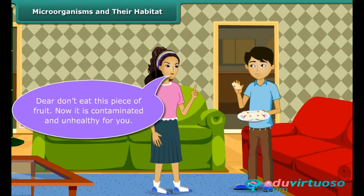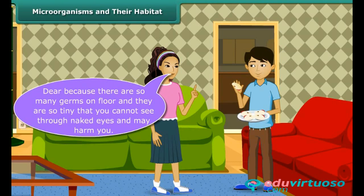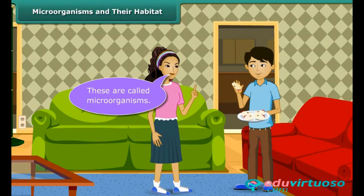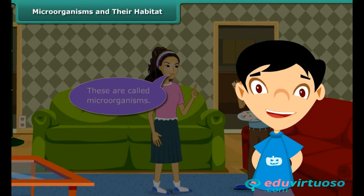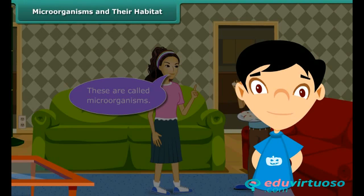Dear, don't eat this piece of fruit — it is contaminated and unhealthy for you. Because there are so many germs on the floor and they are so tiny that you cannot see them with naked eyes, and they may harm you. These are called microorganisms. You will be surprised to know that a microorganism can help us in making our food and the same can make us ill too. So before getting more information about them in detail, let us first know about such microorganisms and their habitat.